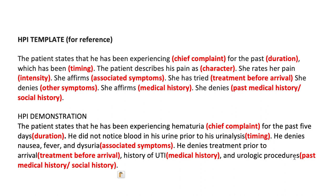As you can see in this HPI, everything is jam-packed. Things like denying treatment before arrival, history of UTI, and urologic procedures are packed into one sentence. The goal is to get all pertinent information as concisely as possible. This template is not the be-all, end-all — ten different HPIs could all be equally correct. The important thing is to include all of the red billable elements. Next unit, we'll go through all of the billable elements line by line. Thank you for watching — please leave any questions in the comments.